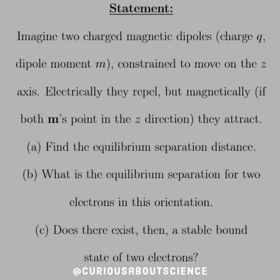Electrically, they repel, but magnetically, if both M's point in the z-direction, they attract. So, we need to find equilibrium separation distance, and B, what is the equilibrium separation for two electrons in this orientation? Does there exist, then, a stable bound state for the two electrons?